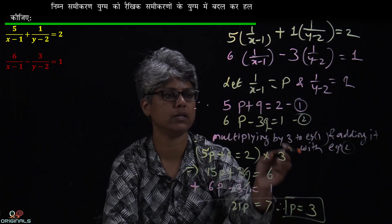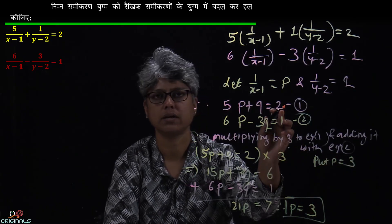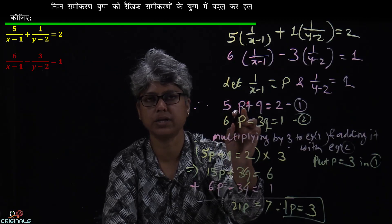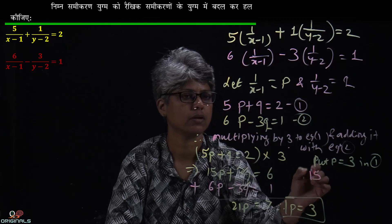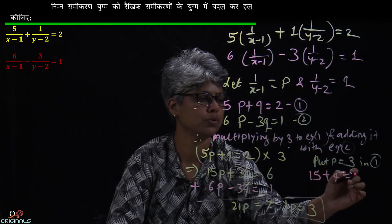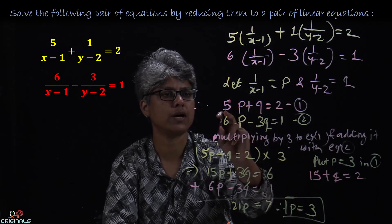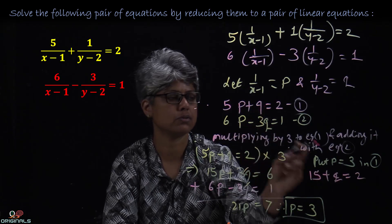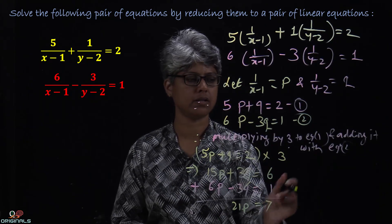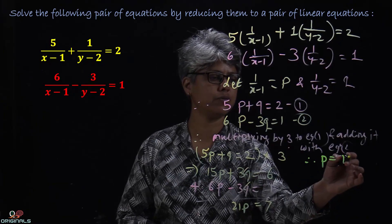Now, putting P equal to 1/3 in equation 1. So equation 1 gives us 5 into 1/3 plus Q equal to 2, that is 5/3 plus Q equal to 2. So 21P gives 7, therefore P = 7/21, which equals 1/3. P is equal to 1/3.